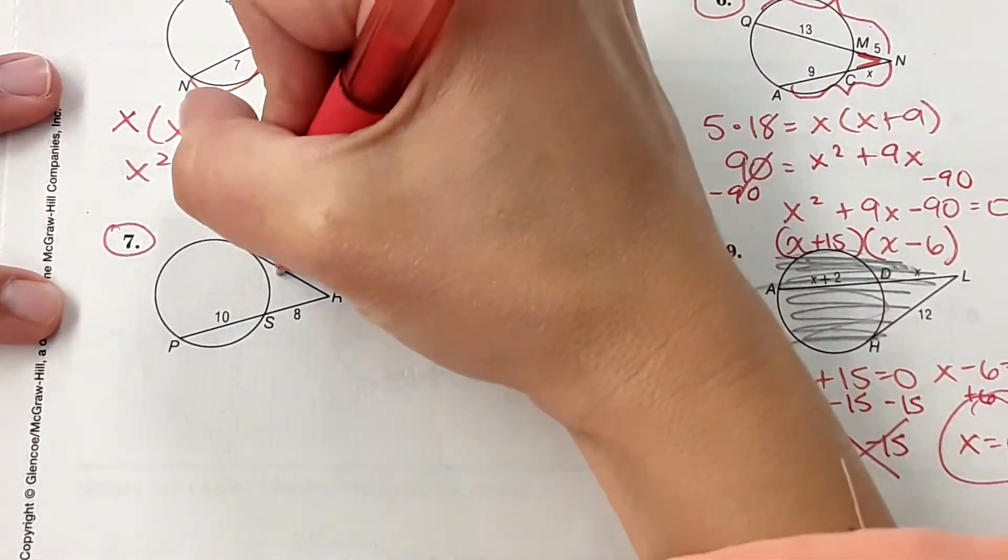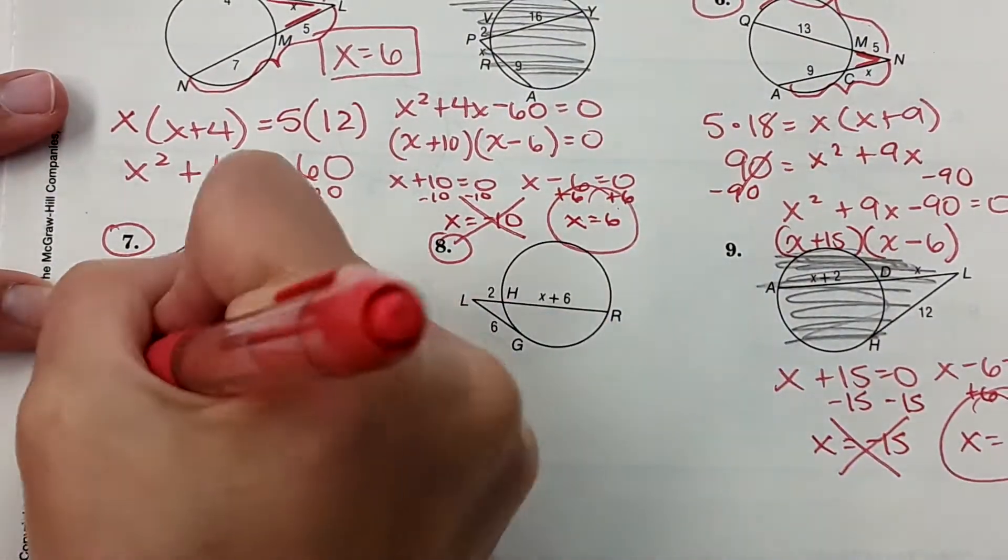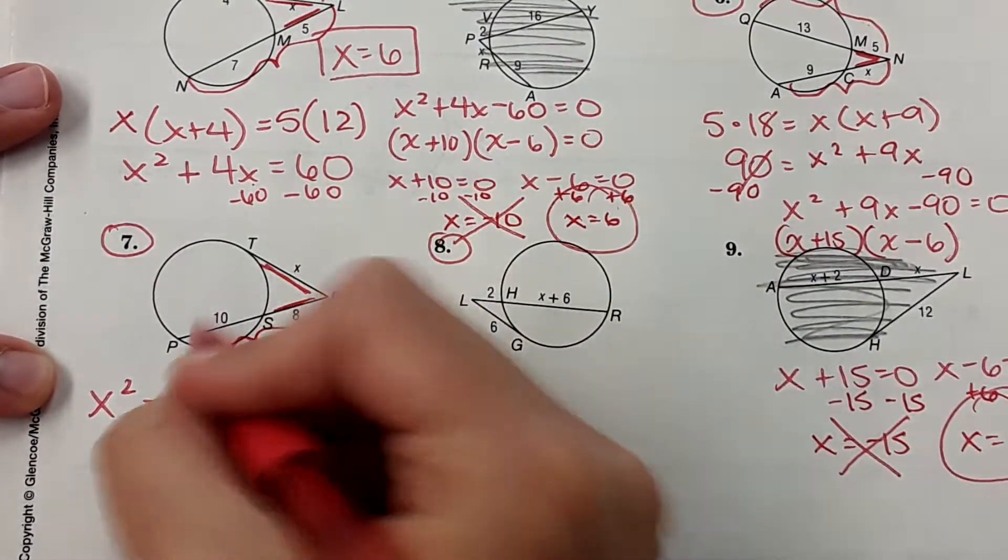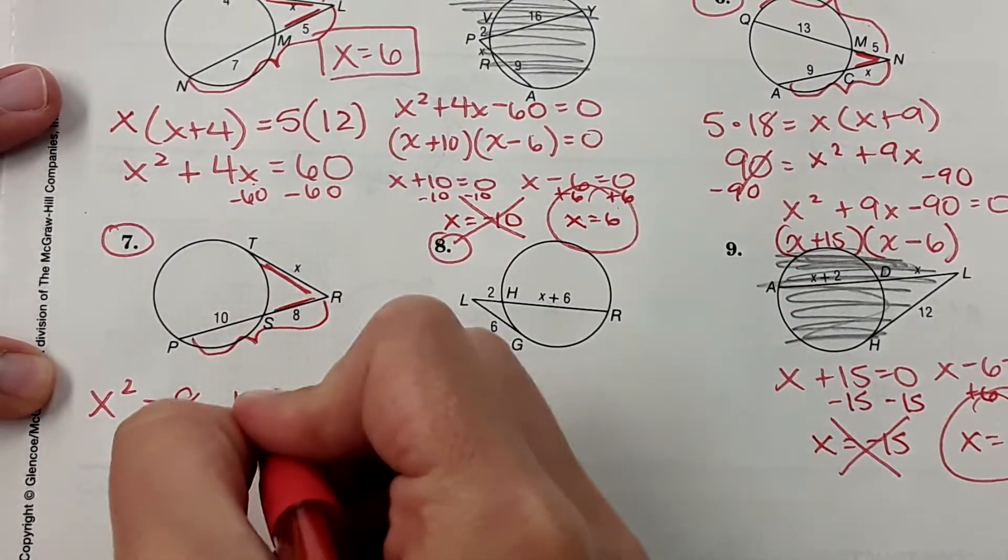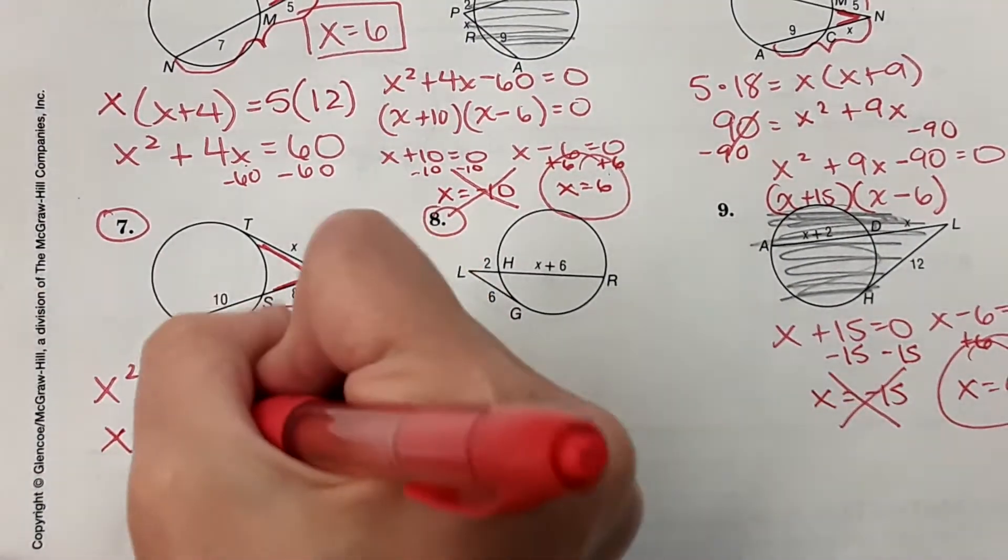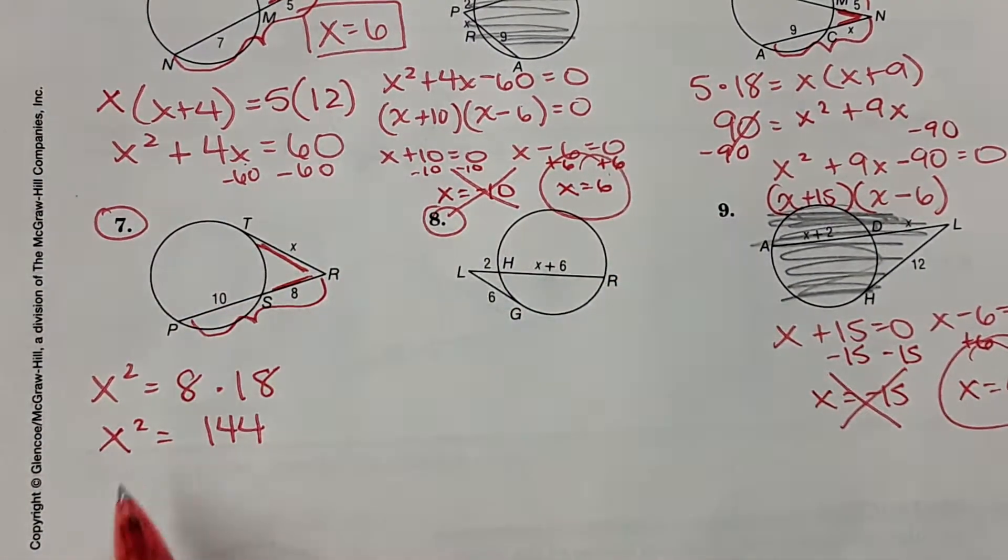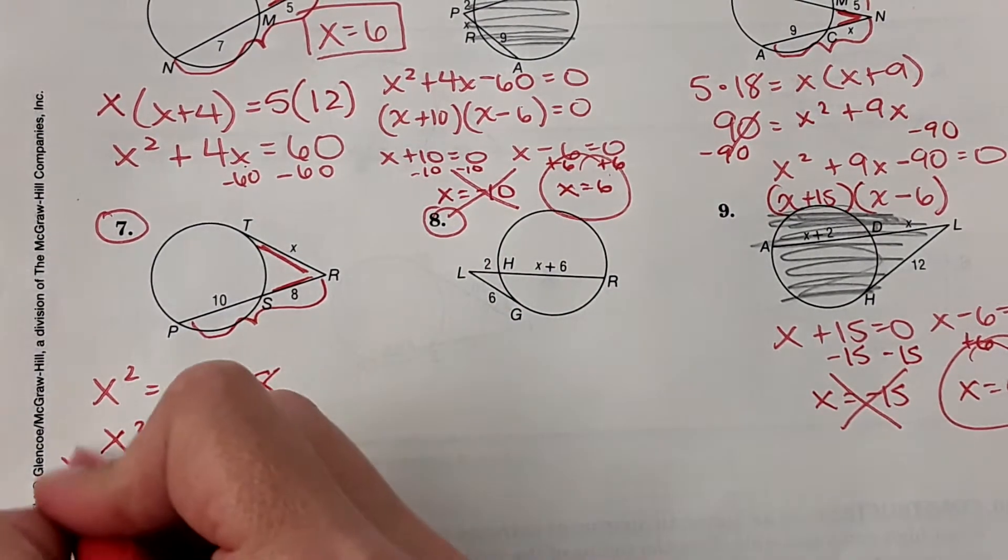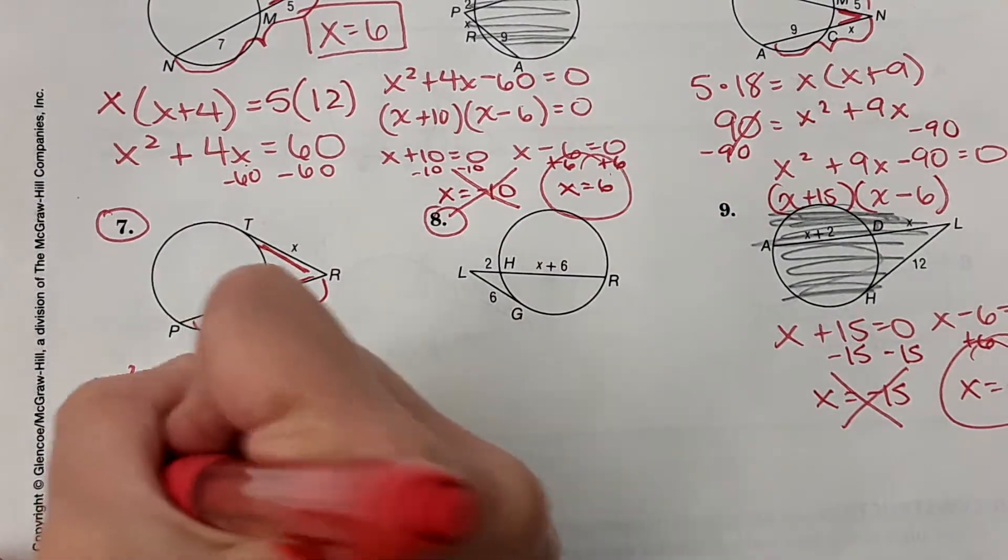In this situation, it's going to be this length squared. So x squared equals 8 times 18. 8 times 18 is 144. Since it's just x squared and you don't have plus 2x, in this case, you can just take the square root of both sides. So x equals 12.